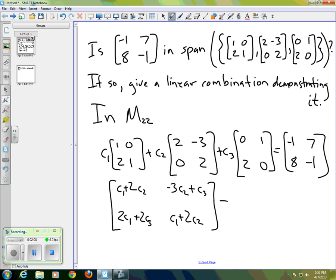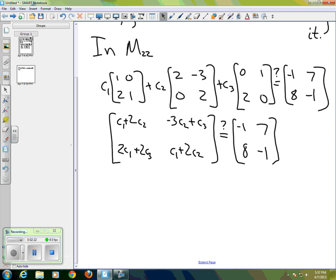And the question is whether or not we can come up with constants to make that equal to [-1, 7; 8, -1]. So those two matrices would be equal if and only if the corresponding entries are equal. So we end up with a system of equations: C1 plus 2C2 equals negative 1, negative 3C1 plus C3 equals 7, 2C1 plus 2C3 equals 8, and C1 plus 2C2 equals negative 1.